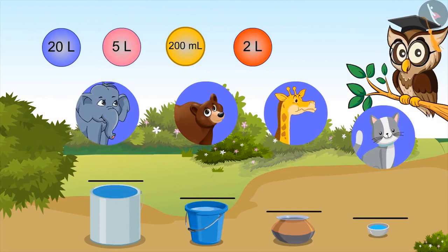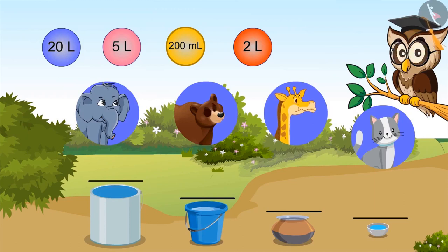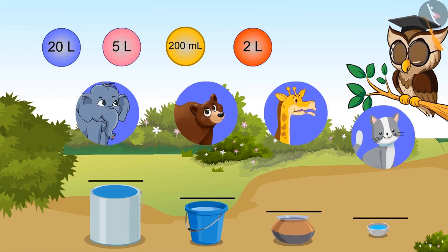Look carefully at these vessels and fill in the blanks according to the given measurement. Kids, you can pause the video to find out the answer. I will tell first — drum, because it is the largest of all and can carry 200 ml of liquid. No, no. Sir just told that milliliters is smaller than litres — one thousand milliliters makes one litre. So two thousand milliliters is much less than one litre.